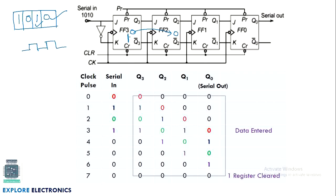This is why we call this device a shift register — the zero is shifted to the next flip-flop and the new value one is stored in the first. In the third clock cycle, zero is input, one is transferred to the next stage, and in the fourth clock cycle, one is the fresh input, stored in the first flip-flop, while the earlier bits continue shifting along the chain.